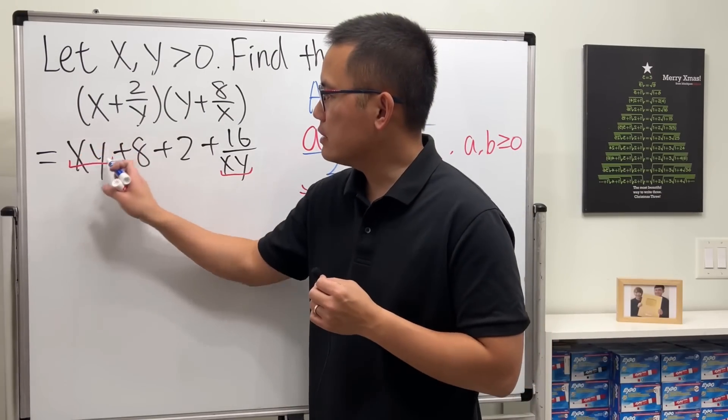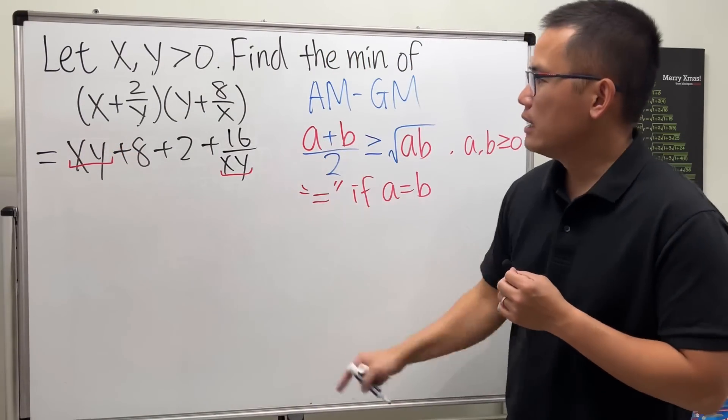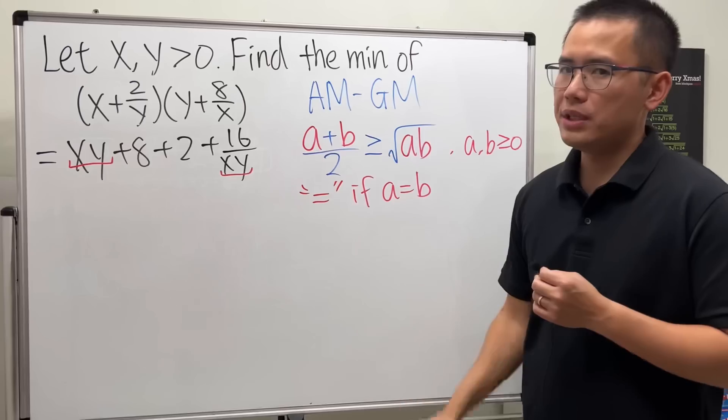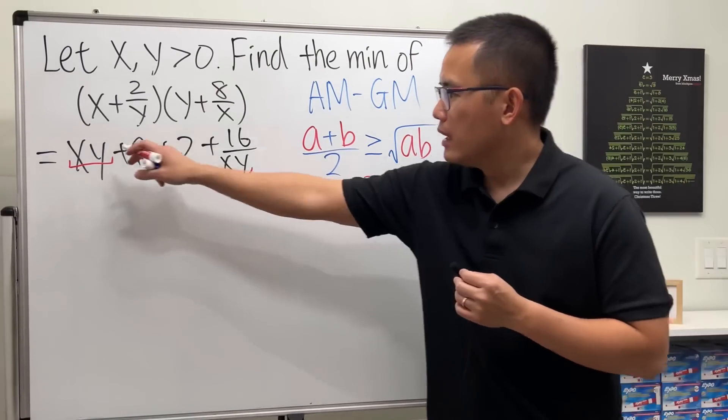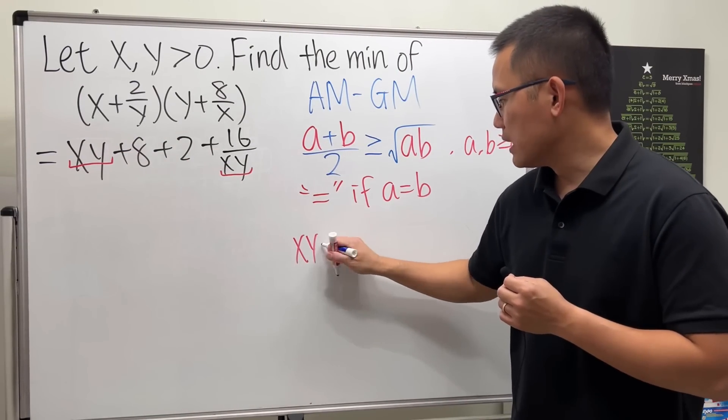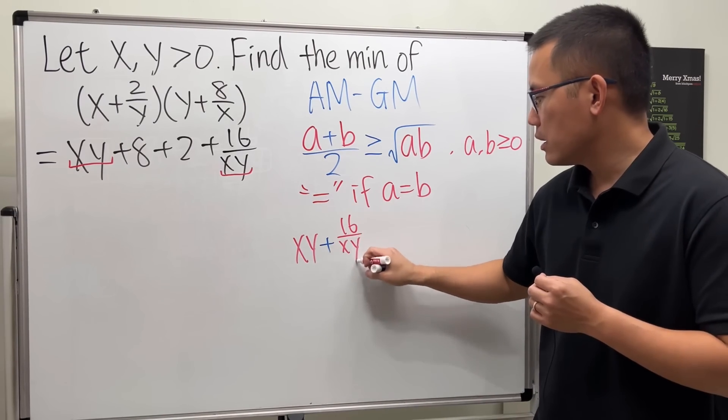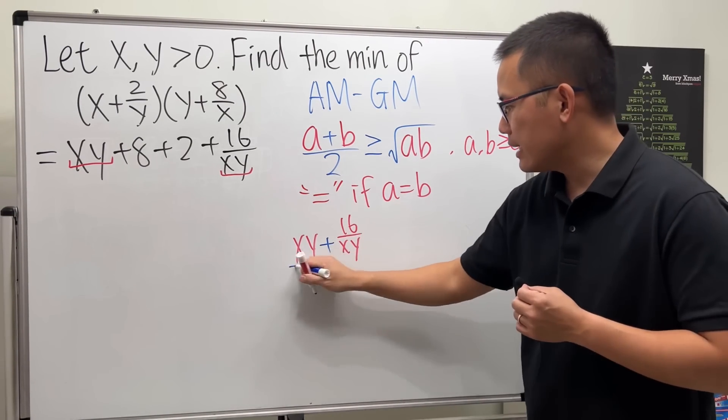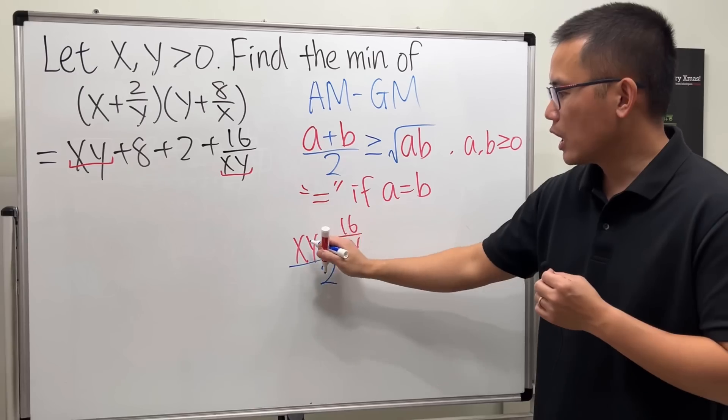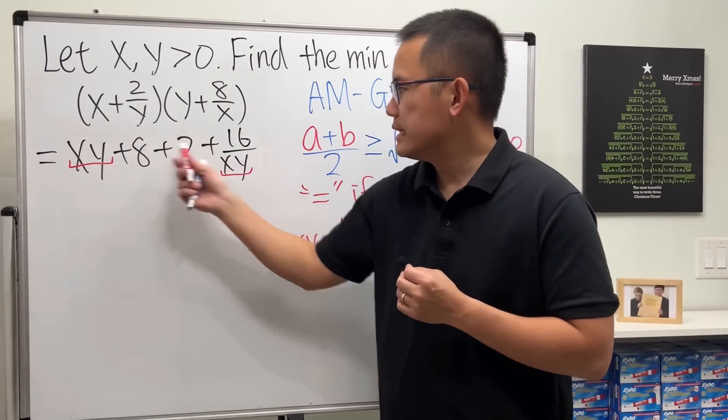All right, so how can we utilize this? I'm going to take this whole thing as our a and then take this whole thing as the b. Check this out: xy plus 16 over xy, and then make sure we divide it by 2—so that's the arithmetic mean for this and that.